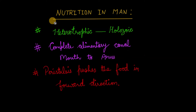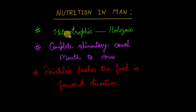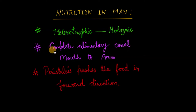Now let's start with nutrition in human beings. Three main points are to be taken care of. The first point is that it is heterotrophic — man cannot make its own food and has to depend upon other organisms for food. We directly or indirectly depend on plants for our food, and the kind of nutrition is holozoic. The second point is a complete alimentary canal — the kind of alimentary canal which has two openings.